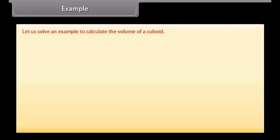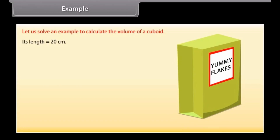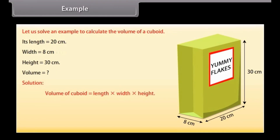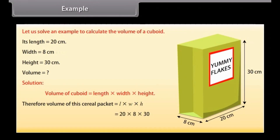Let us solve an example to calculate the volume of a cuboid. Look at this cereal packet. Its length is 20 cm, width is 8 cm, and height is 30 cm. We have to find its volume. The volume of a cuboid is L × W × H, therefore the volume equals 20 × 8 × 30, which equals 4800 cm³.